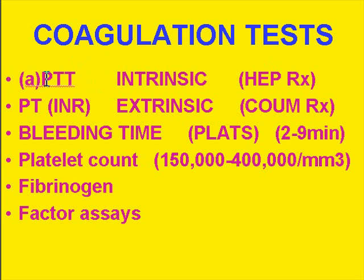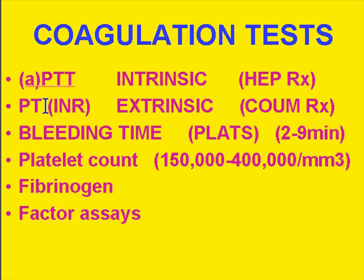Now it's called APTT — activated partial thromboplastin time. The PT is now called INR, which represents the same concept as the prothrombin time and measures the extrinsic pathway. To make a long story short: patients on heparin — get an APTT. Patients on Coumadin or oral anticoagulants — measure the extrinsic system using the INR, the normalized prothrombin time.